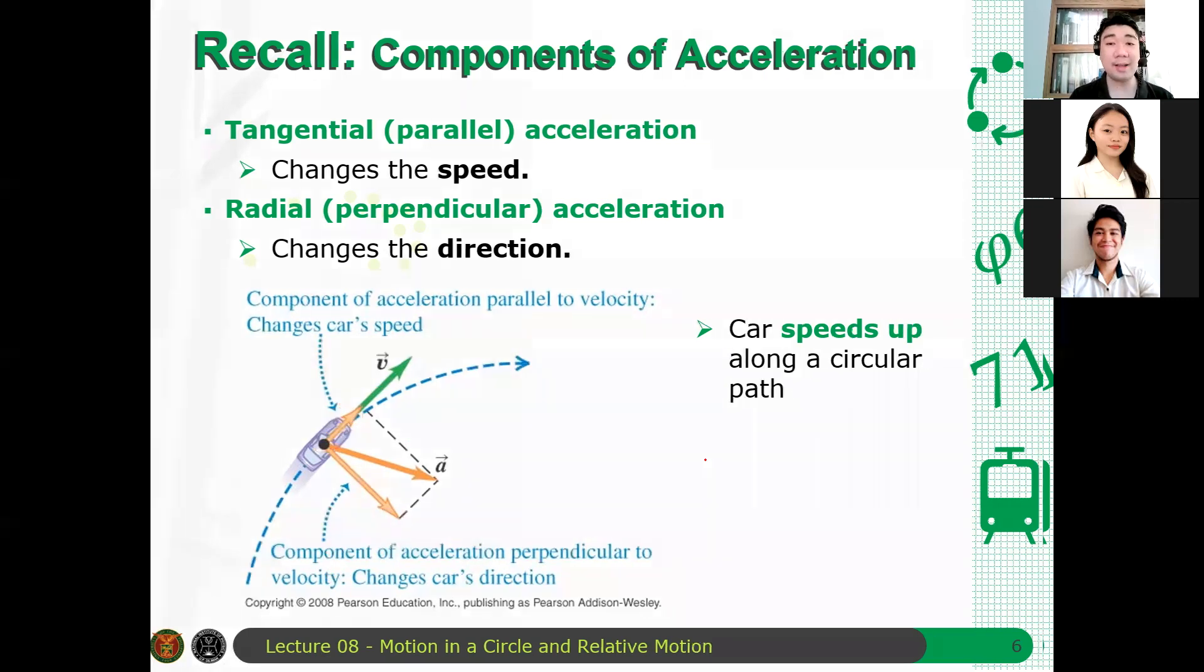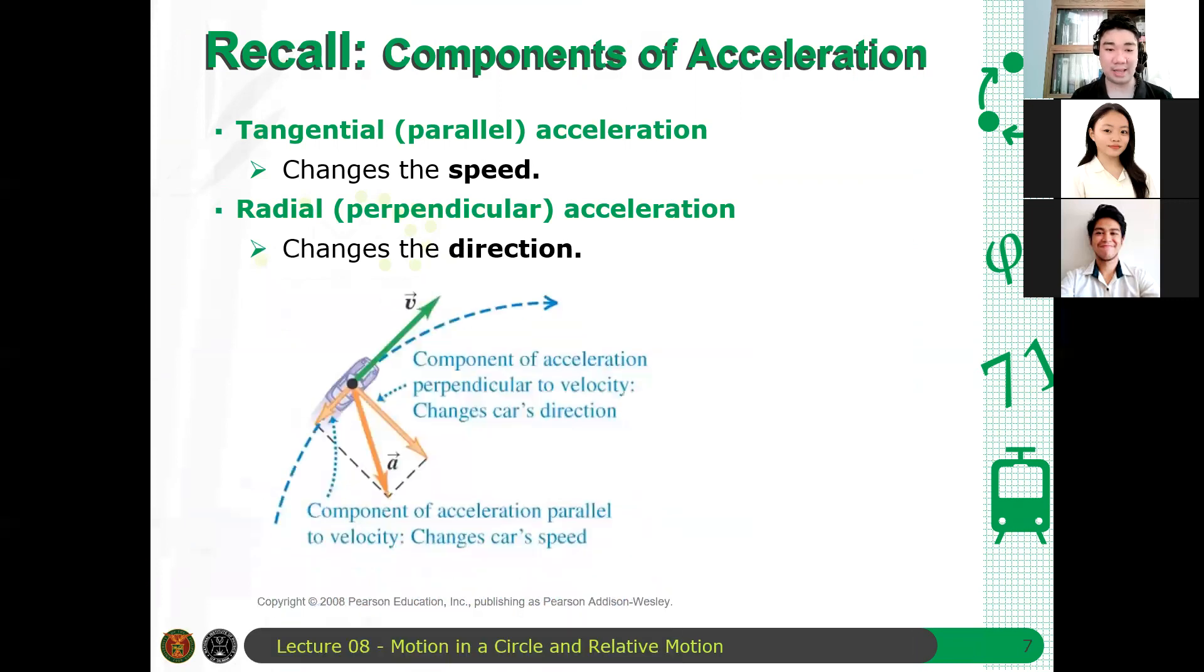What about if the case is like this? If the acceleration, if the parallel component of acceleration is anti-parallel to the velocity, since V and A are in opposite directions now, that is, A parallel is in opposite directions now, what happens is that the acceleration reduces the velocity, and therefore, the car slows down. Kaya, mabagal yung car. But it still changes its direction because there's still a component, radial to the path. Nang tindihan? Yes. I hope this is clear.